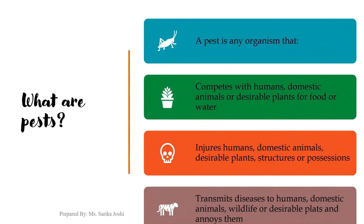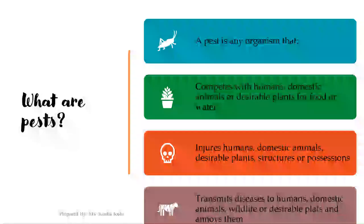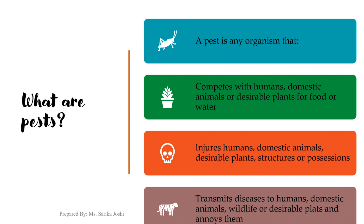A pest is an organism that competes with humans, domestic animals or desirable plants for food and water. A pest may injure humans, domestic animals, desirable plants, structures or possessions. They can transmit diseases to humans, domestic animals, wildlife or desirable plants, and annoy humans or domestic animals.